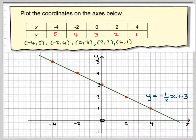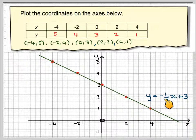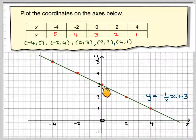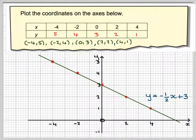You can link this to y equals mx plus c. For example, the gradient here will be 2 along and 1 down, so that's minus 1 divided by 2, which is minus one-half. And the y-intercept is 3. So we're linking different parts of the course here together: substitution, drawing graphs, and the idea of y equals mx plus c.